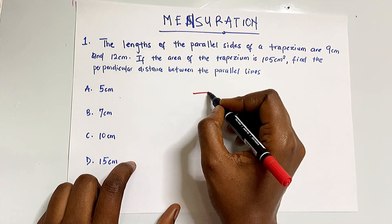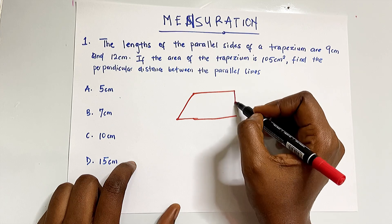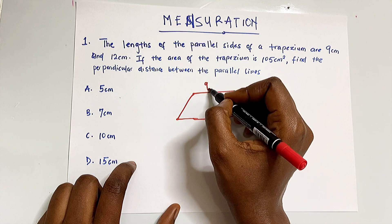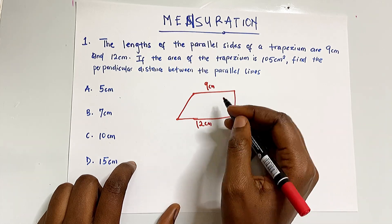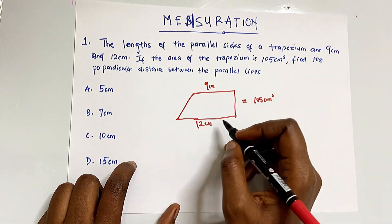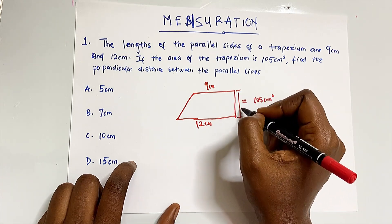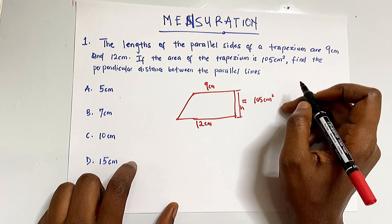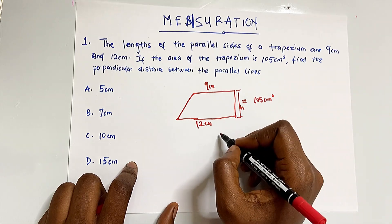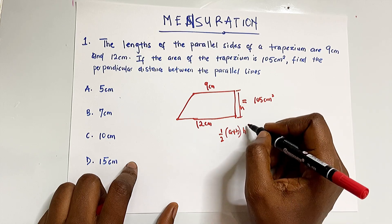The trapezium has two parallel lines at the top and bottom. The top is 9 centimeters and the bottom is 12 centimeters, and the area is 105 centimeters squared. We need to find the height — the perpendicular distance between the parallel lines. The formula for the area of a trapezium is: 1/2 × (a + b) × h.